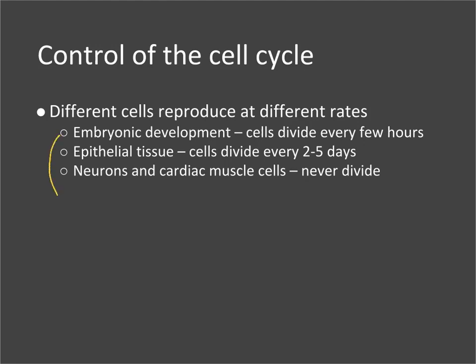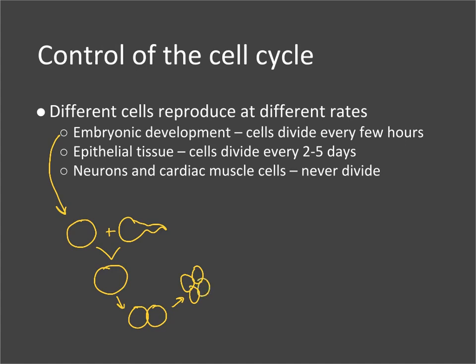One example is embryonic development. You are made up of an egg and a sperm that combine together to form a zygote. That zygote then goes through cell divisions — one cell becomes two, two becomes four, four becomes eight, and they just keep doubling.